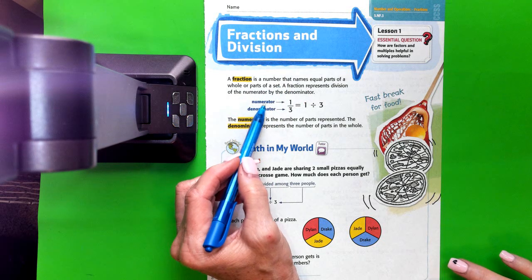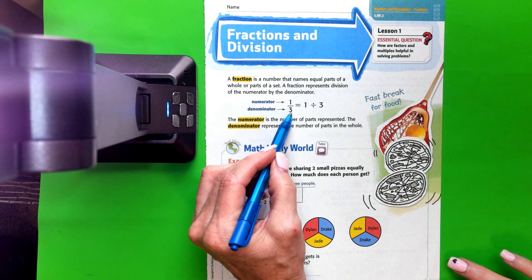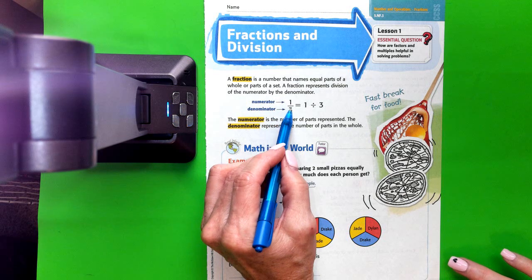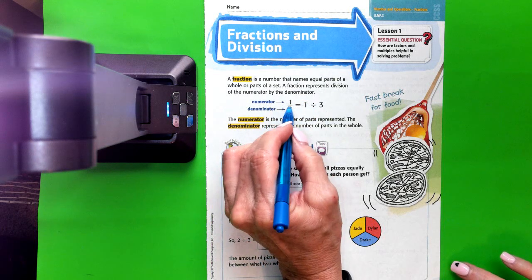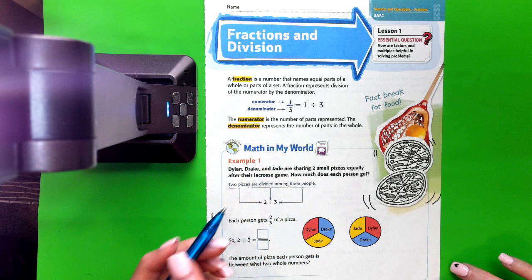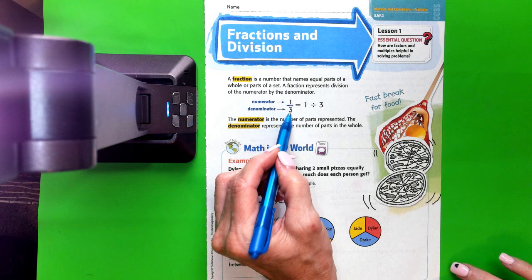So the numerator is 1, the denominator is 3, so if we write 1 out of 3 or 1 third, it means the same as 1 divided by 3. This little line here means divided by - 1 divided by 3.